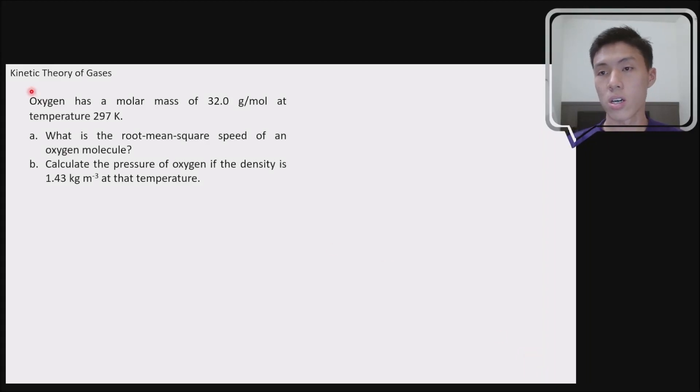Let's try to solve this problem here. Oxygen has a molar mass of 32 grams per mole at temperature of 297 kelvin. So they give you here the molar mass of the oxygen. I believe it's O2 that we are talking about here. So molar mass in our syllabus is represented as capital M. So our capital M here is equal to 32 grams per mole.